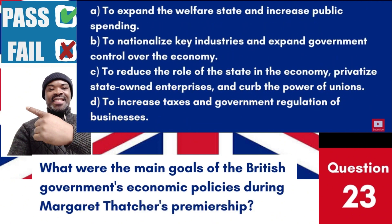Question 23: What were the main goals of the British government's economic policies during Margaret Thatcher's premiership? a. To expand the welfare state and increase public spending. b. To nationalise key industries and expand government control over the economy. c. To reduce the role of the state in the economy, privatise state-owned enterprises, and curb the power of unions. d. To increase taxes and government regulation of businesses. Answer: c. To reduce the role of the state in the economy, privatise state-owned enterprises, and curb the power of unions. Margaret Thatcher's economic policies focused on deregulation, privatization, and reducing the influence of trade unions, aiming to shift towards a more market-oriented economy.